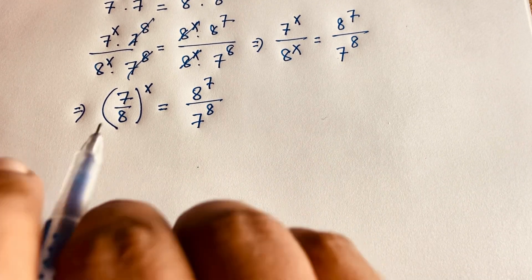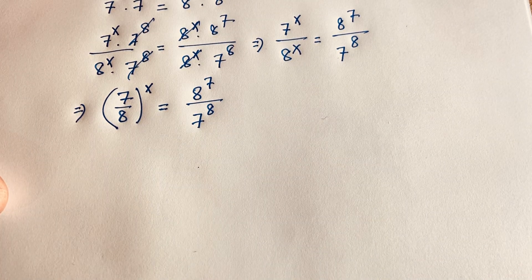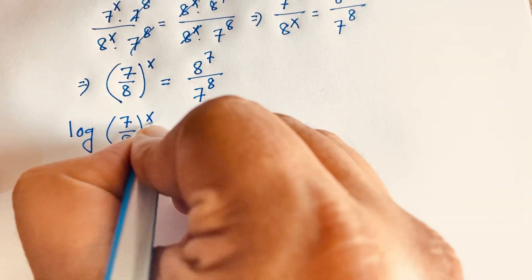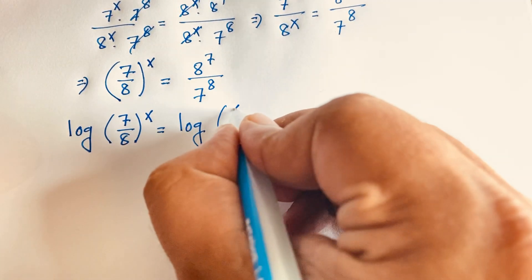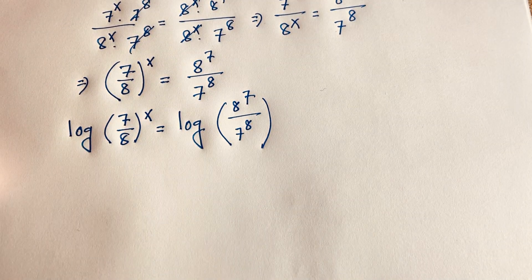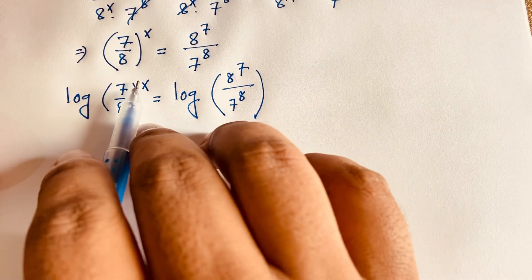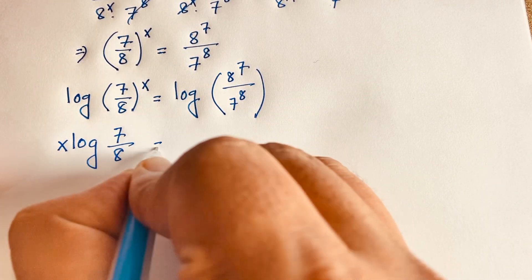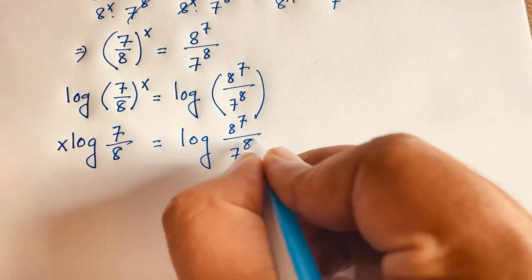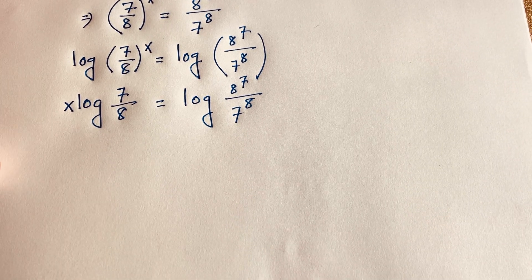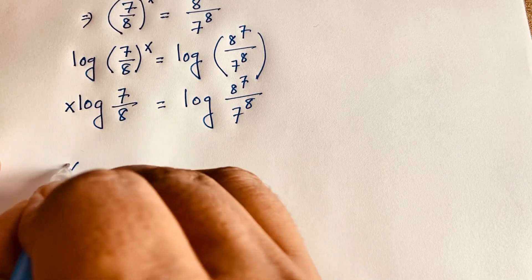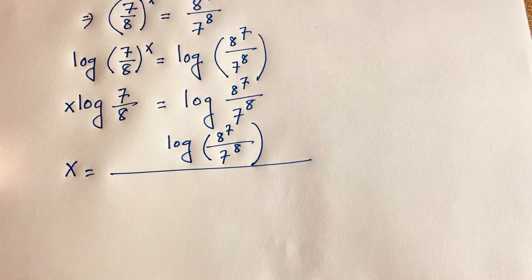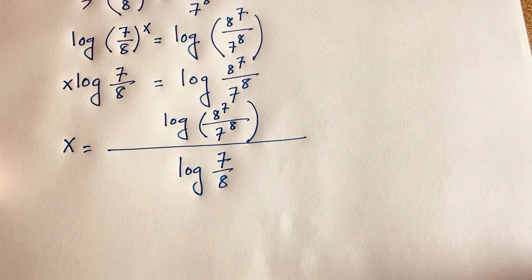Then, if I want to find out the value of x in this equation, I apply log to both sides. So log of 7 over 8, whole to the power x, is equal to log of 8 to the power 7 over 7 to the power 8. According to logarithm rules, the exponent moves in front, so it will be x times log(7/8) is equal to log of 8 to the power 7 over 7 to the power 8. If I divide both sides by log(7/8), we get x is equal to log(8^7 / 7^8) over log(7/8).